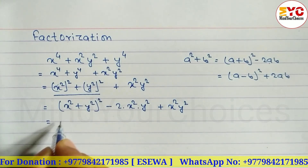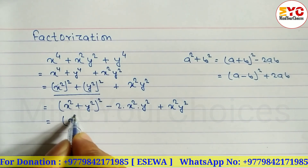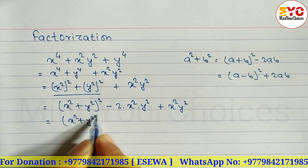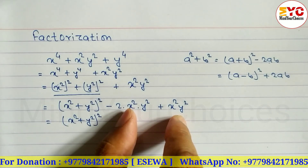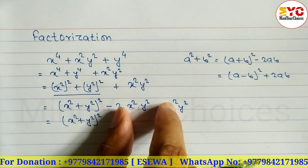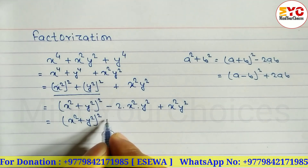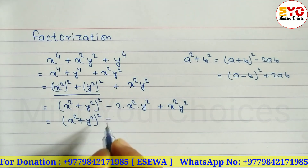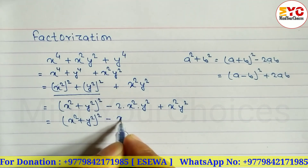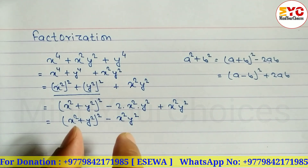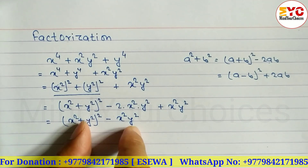We now have (x² + y²)². The two x²y² terms are like terms: -2x²y² + x²y² = -x²y². So we are left with (x² + y²)² - x²y².